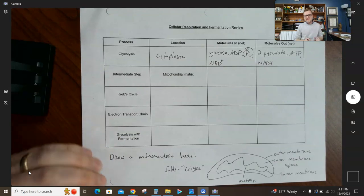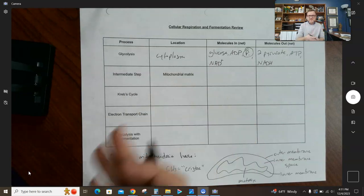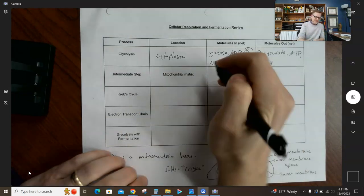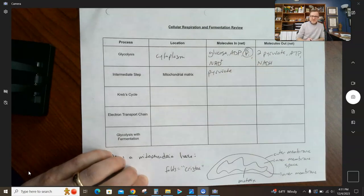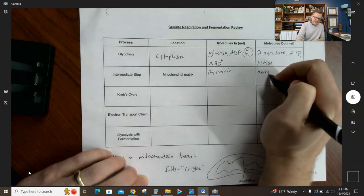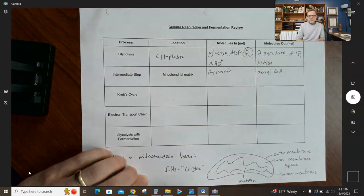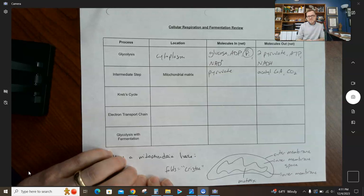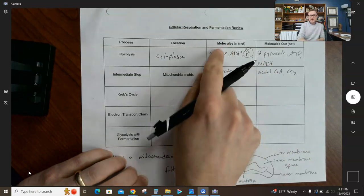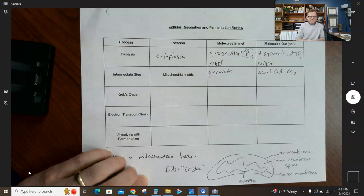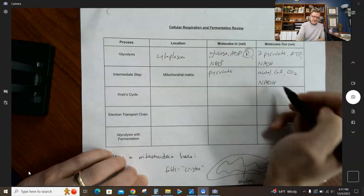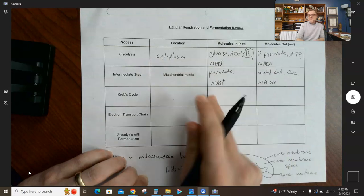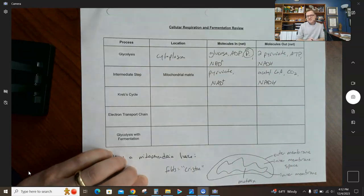The intermediate step—every year this is one that I always forget where it happens, so I have on the handout to remind myself that it happens in the mitochondrial matrix. Those two pyruvates that you made in the previous step go into the intermediate step and they come out as acetyl-CoA. Pyruvates have three carbons, acetyl-CoAs have two carbons, so you lost a carbon, which means you produced carbon dioxide. This step also produces some NADH, which means you required the oxidized form NAD plus. Remember NADH is an electron shuttle which is going to carry those high energy electrons to the electron transport chain in a later step.